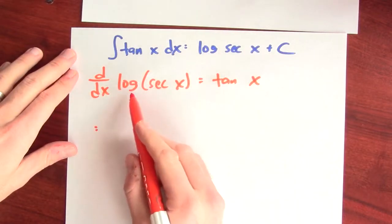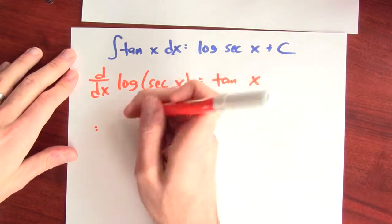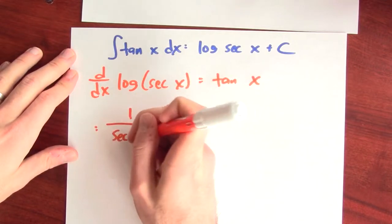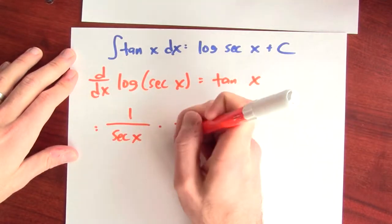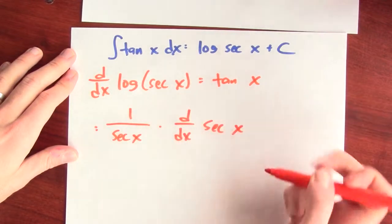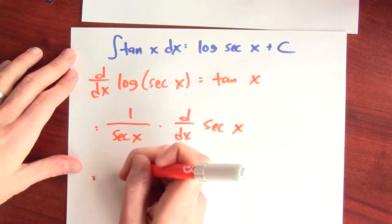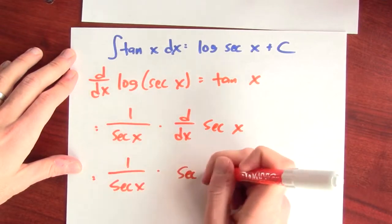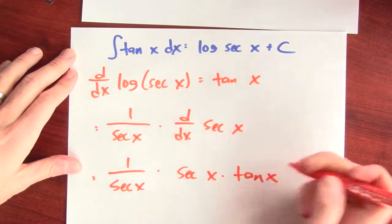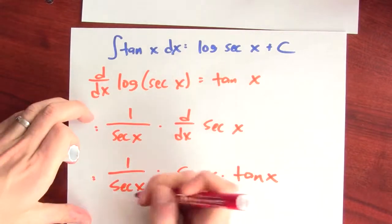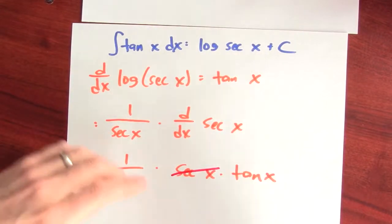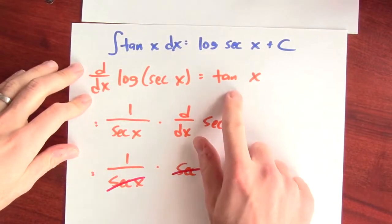So what's the derivative of log? It's 1 over the inside function times the derivative of secant. What's the derivative of secant? It's secant tangent. So this is 1 over secant times secant x times tangent x. Good news, the secants cancel and what I'm left with is just tangent x.